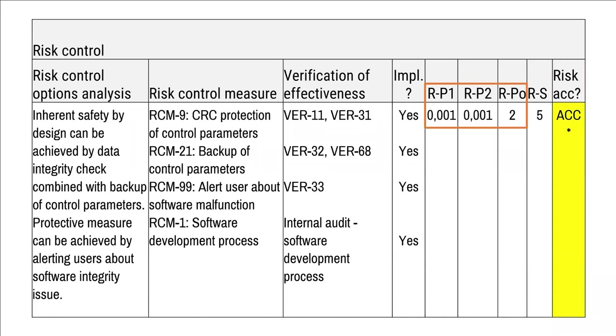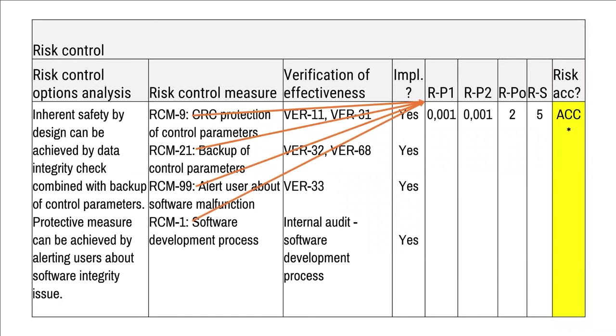Switching to the risk control part of the HTM, you find risk control option analysis, risk control measures, verification of effectiveness, whether risk control measures are implemented, and lastly P1 and P2. It looks the same as in the risk analysis section, but now P1 has a lower number. If you want to aim for perfection, you could assign a risk reduction number to each risk control measure and combine them into a single P1. However, this quickly becomes complicated and you might end up in endless discussions about numbers instead of focusing on designing a safe product. I recommend using common sense: evaluate the combination of available risk control measures and assign a meaningful relative probability to P1.